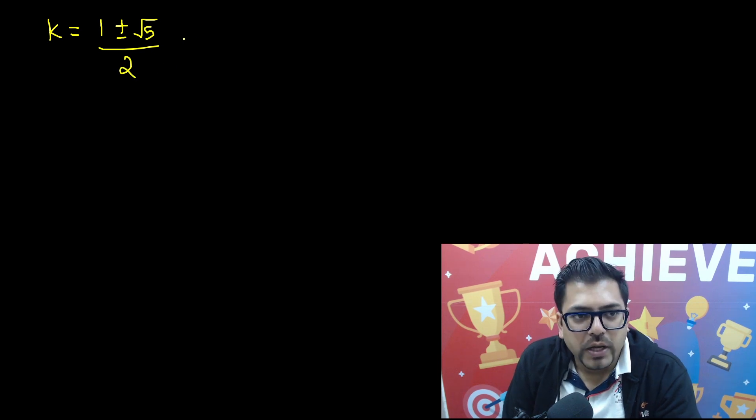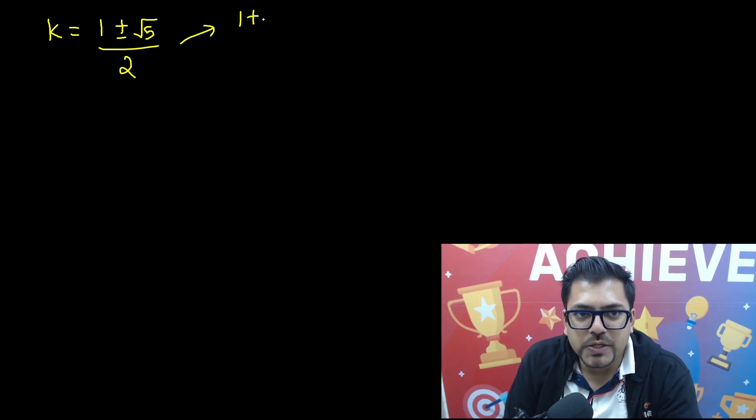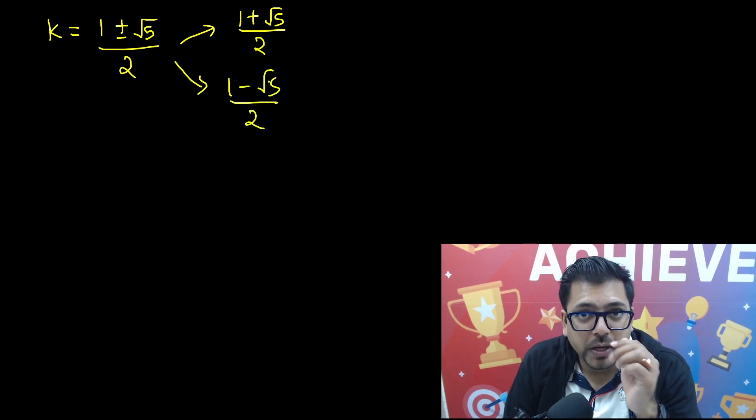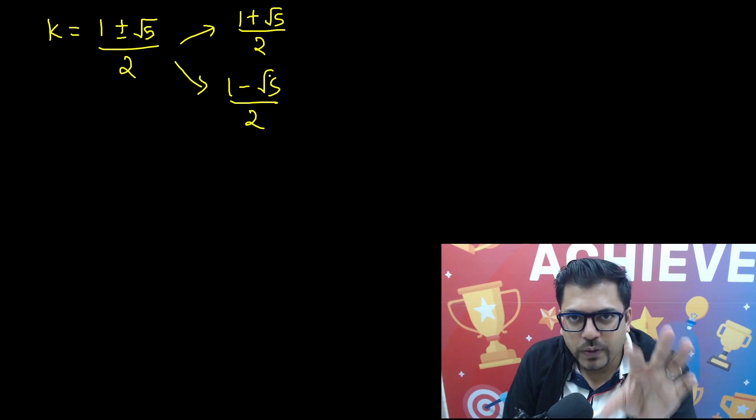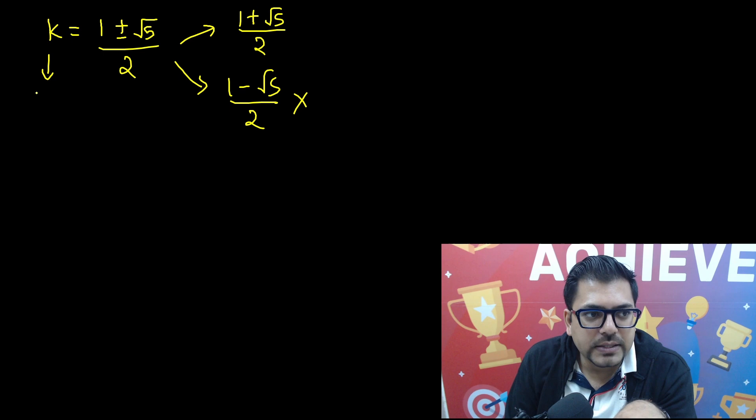Now here we will get two values: 1 plus root 5 divided by 2, and we'll get another value that is 1 minus root 5 divided by 2. So from here you have to understand which value has to be taken.